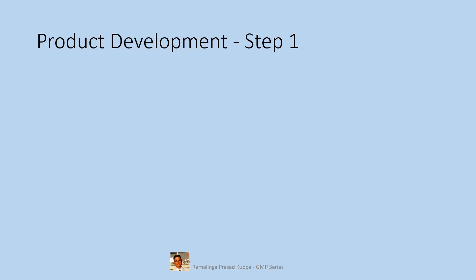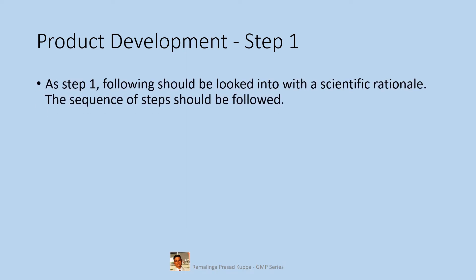Product Development Step 1. The following should be looked into with a scientific rationale. The sequence of steps should be followed. Product Identification is the first step. All the steps have to be addressed in a scientific way. ICH Q9 will support the risk assessment in very much detail.